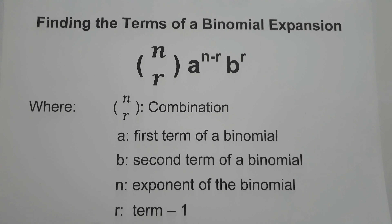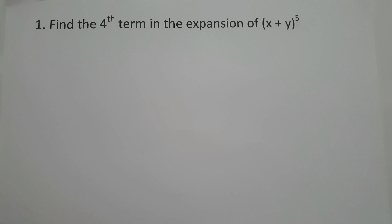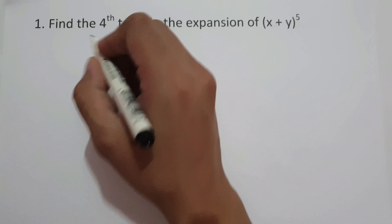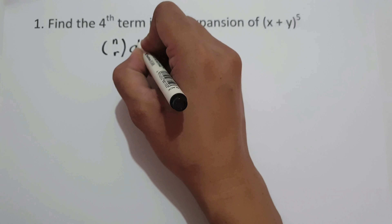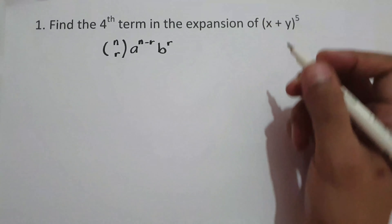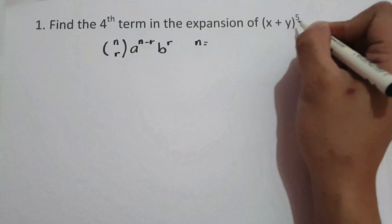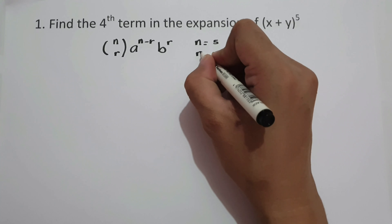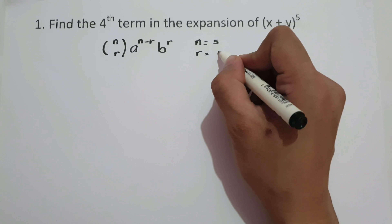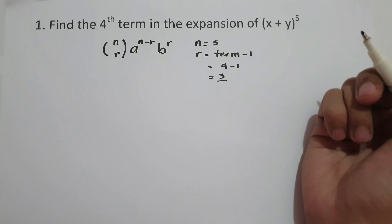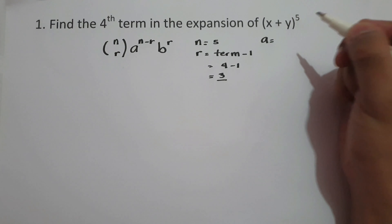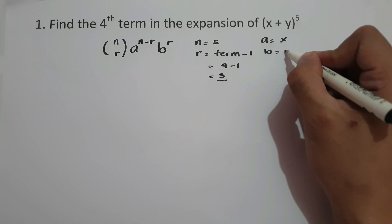So let's start with example number 1. We are going to find the fourth term in the expansion of x plus y raised to 5. To find the fourth term, we use the formula n taken r times a raised to n minus r times b raised to r. Here, n is the exponent, that is 5. To find the value of r, we use term minus 1, that is 4 minus 1, so r is 3. The first term of our binomial is x, and the second term is y.